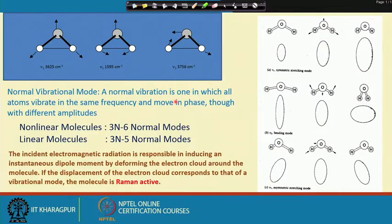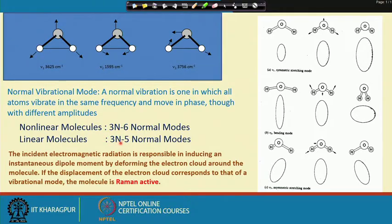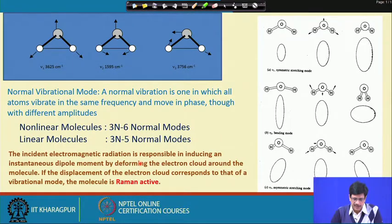Continuing from the last discussion, for simple molecules like water, which is a non-linear molecule, we can have 3n minus 6 normal modes. For linear molecules, it will be 3n minus 5. For example, carbon dioxide has 3 atoms and therefore will have 4 fundamental vibrational modes.